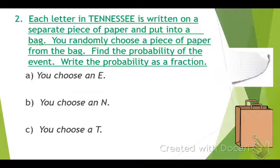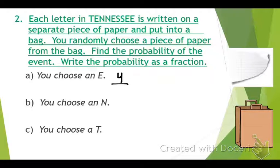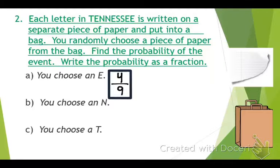What is the probability that I would choose an E? First off, how many E's are in Tennessee? Four. And how many total letters are in Tennessee? Nine. So the probability is four out of nine — there's a four out of nine chance that I would choose an E.